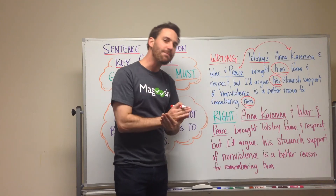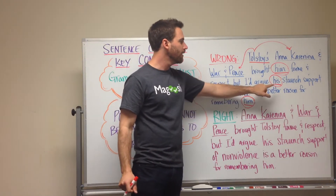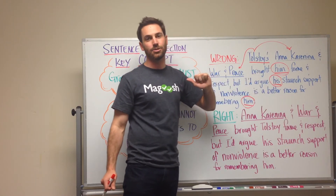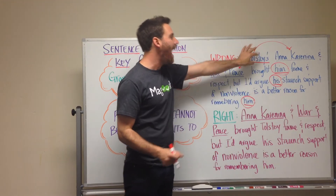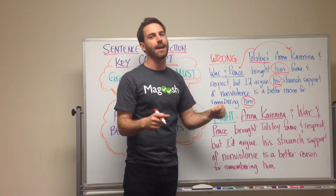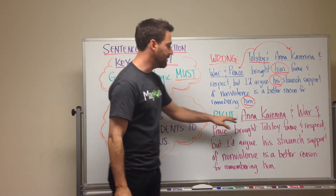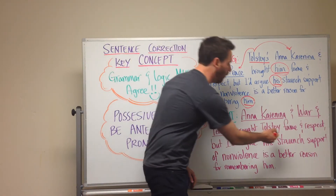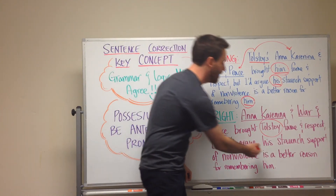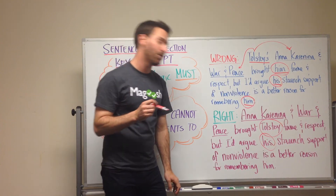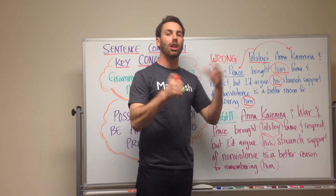We make sense of it and move on, but the GMAT will mark this 100% wrong. They want there to be a clear singular noun — a person — as the antecedent to these pronouns. You'd need to look for an answer choice that changes the sentence so that 'Tolstoy' actually appears as a noun, not as an adjective describing the books. A possible correction would be: 'Anna Karenina and War and Peace brought Tolstoy fame and respect, but I'd argue his staunch support of nonviolence is a better reason for remembering him.' Now 'his' and 'him' have an antecedent they can refer back to — both logically and grammatically.